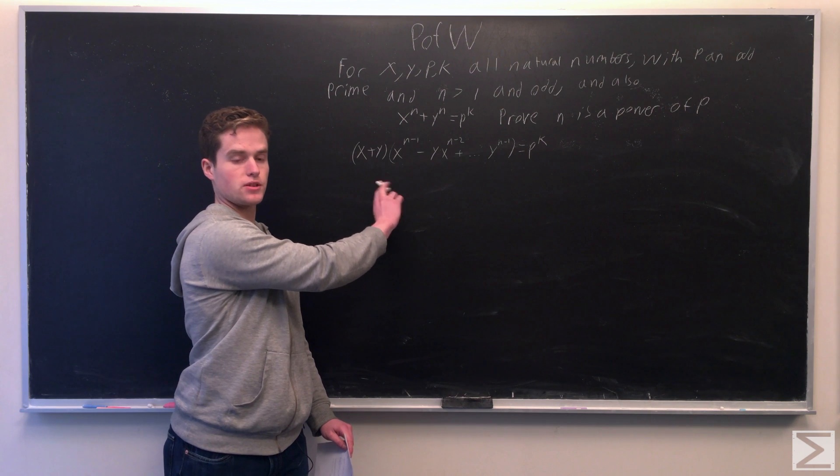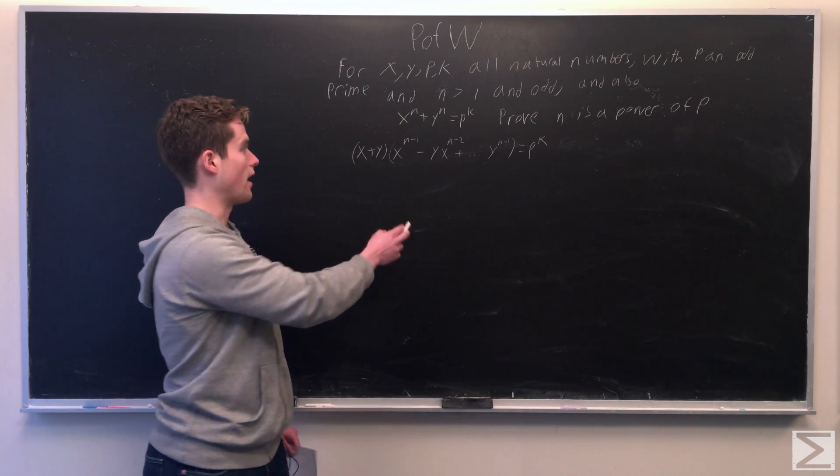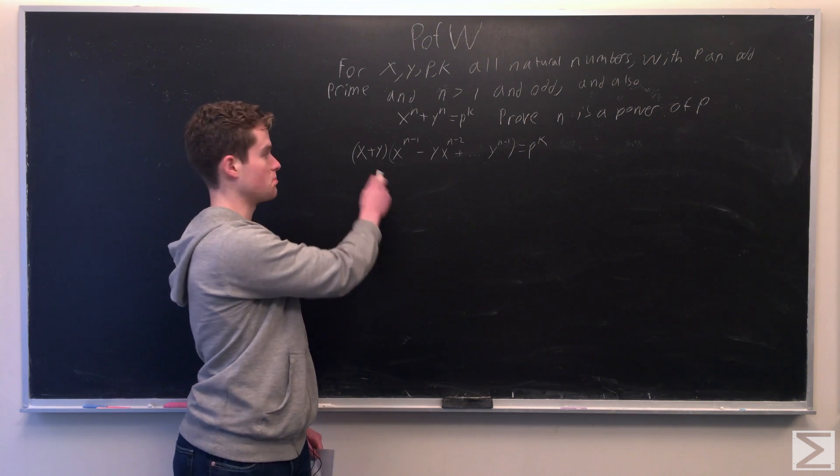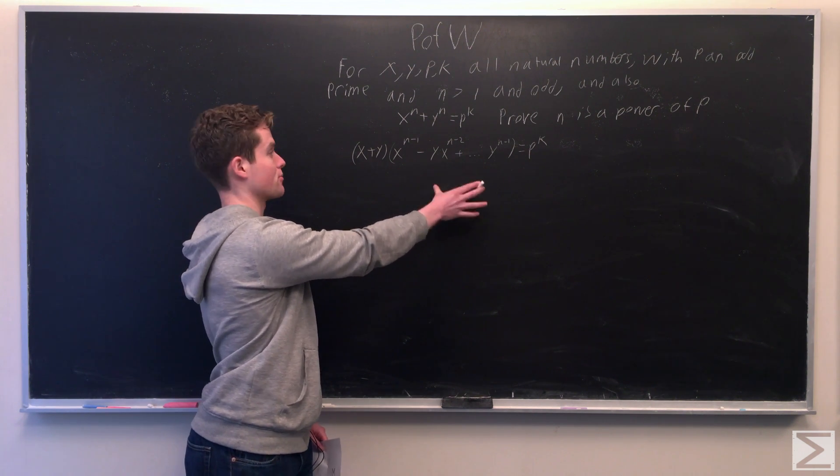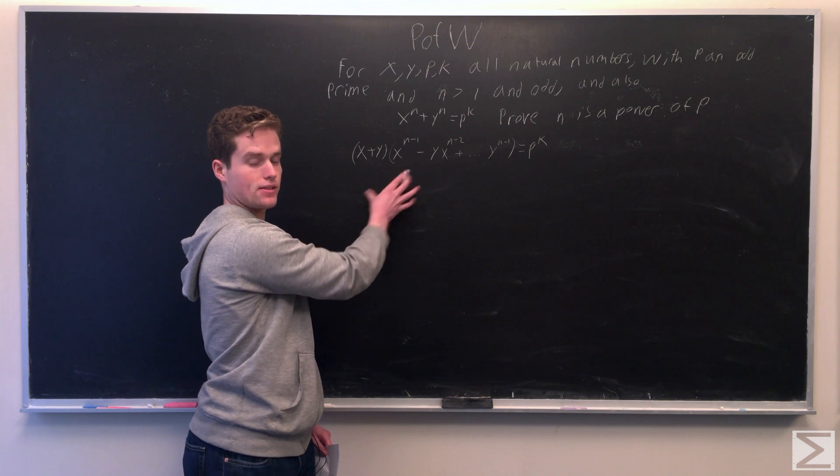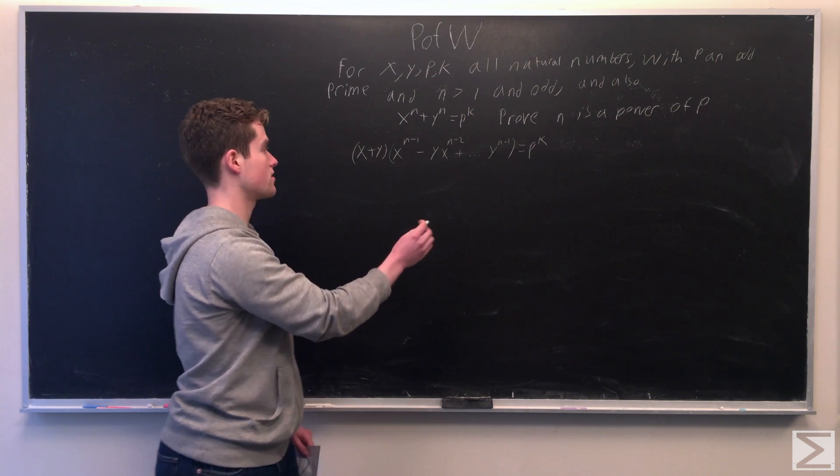And so from this equation, note that because x and y are natural numbers, this has to be greater than 1. Same with this thing here, this will also have to be greater than 1. So both of these have factors of p in them.